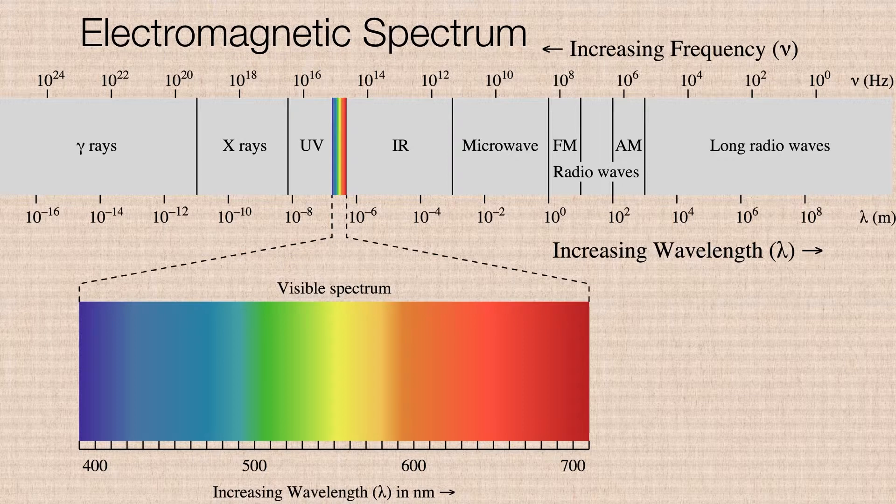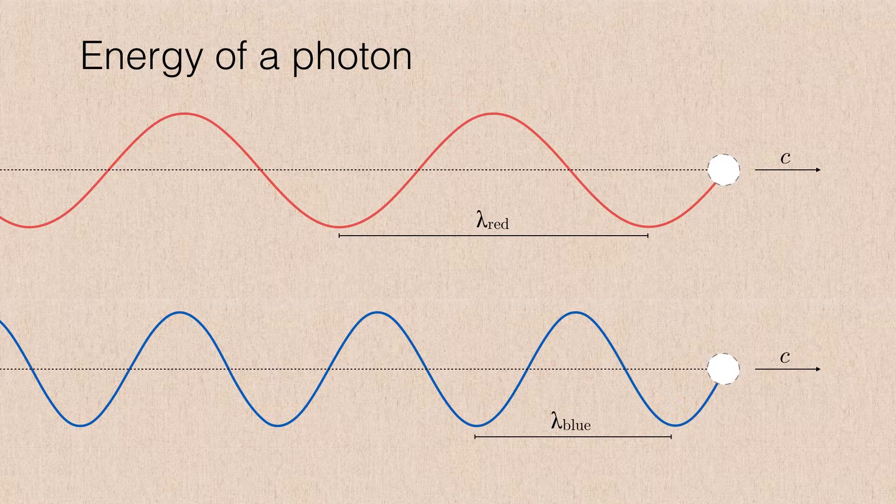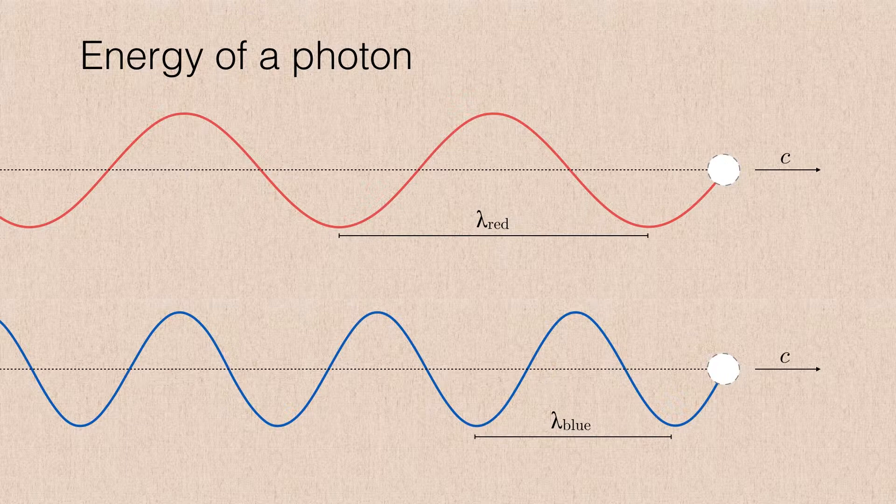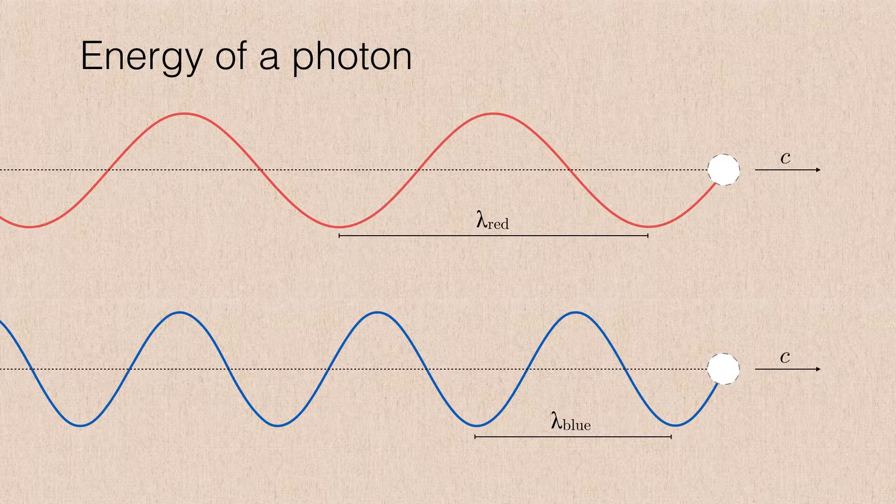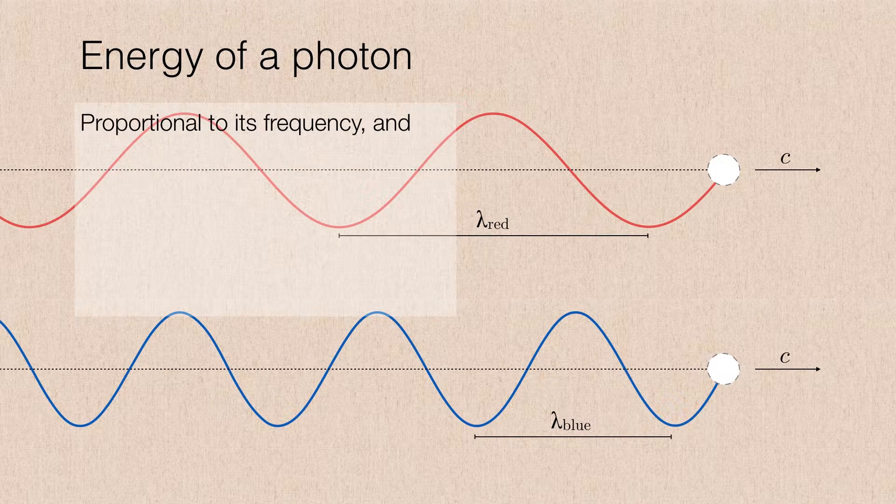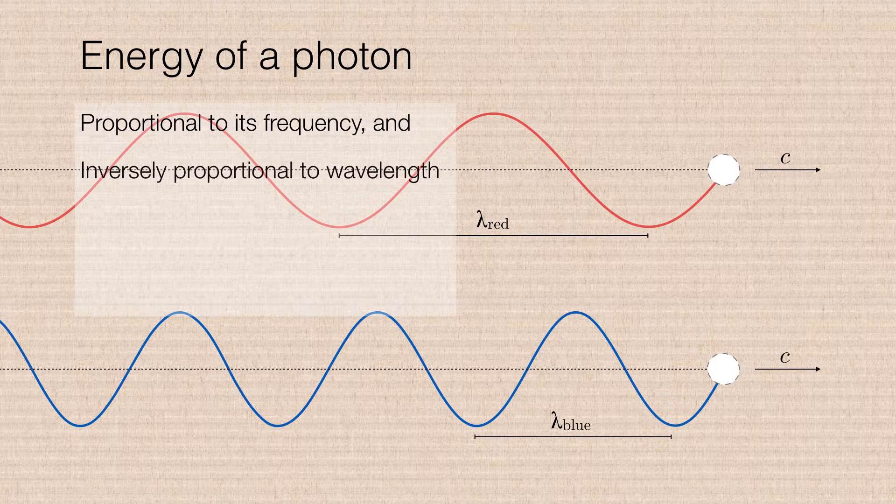And the reason why the gamma rays are so dangerous and why radio waves are the least dangerous has to do with the energy that is packed into a photon. Now, remember, I said earlier that a photon is just a bundle of energy moving through space at the speed of light. It's also propagating through space as a wave. But the amount of energy determines what those waves are going to be like.